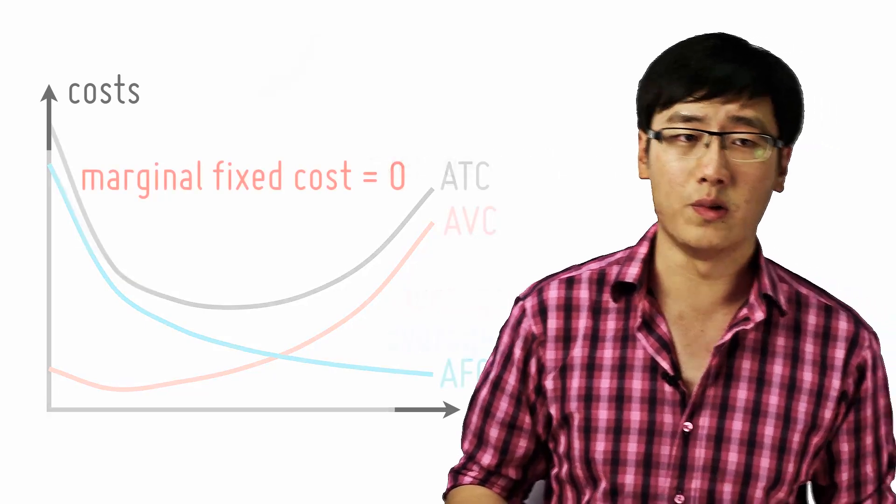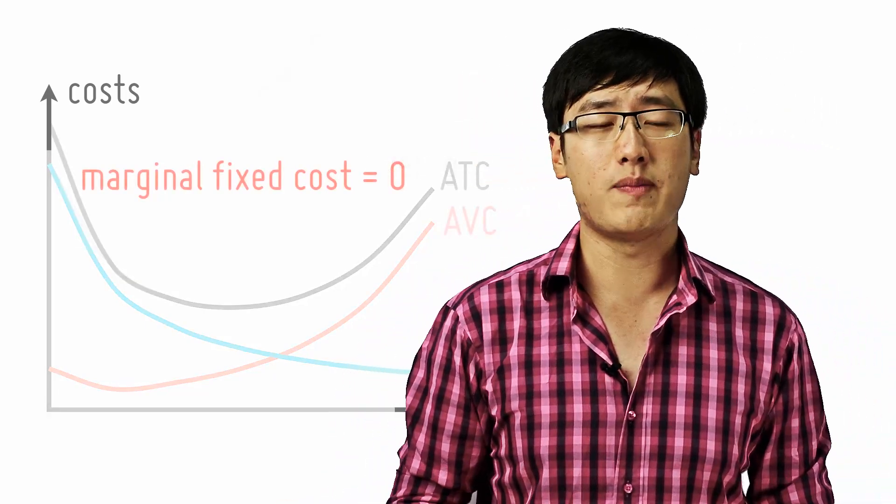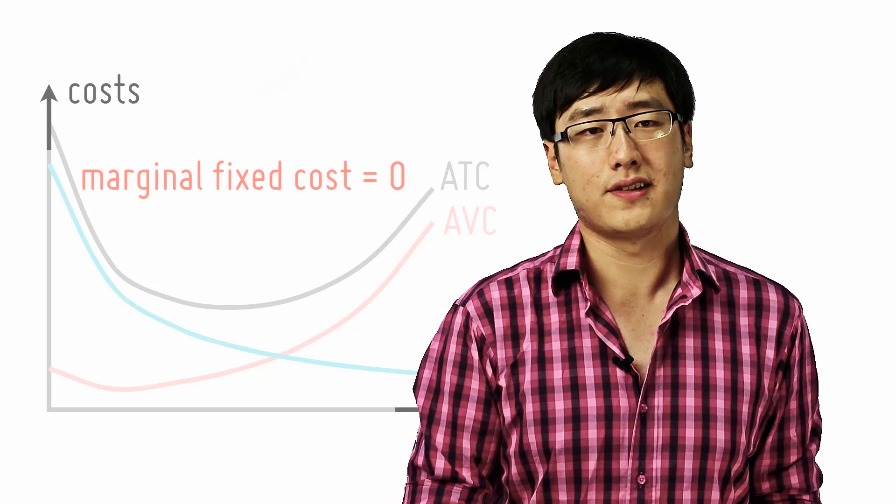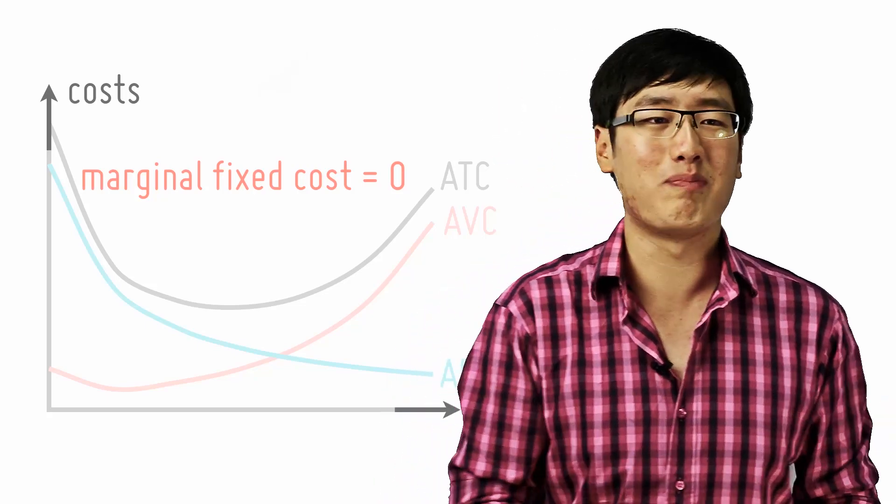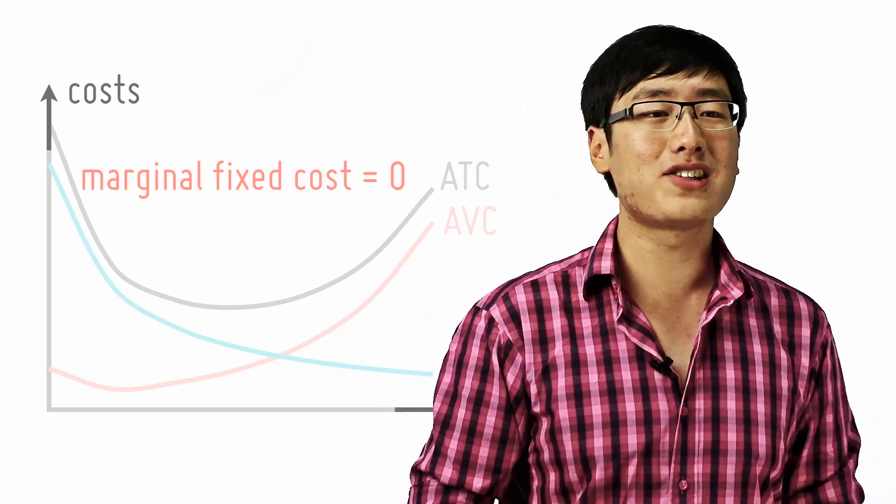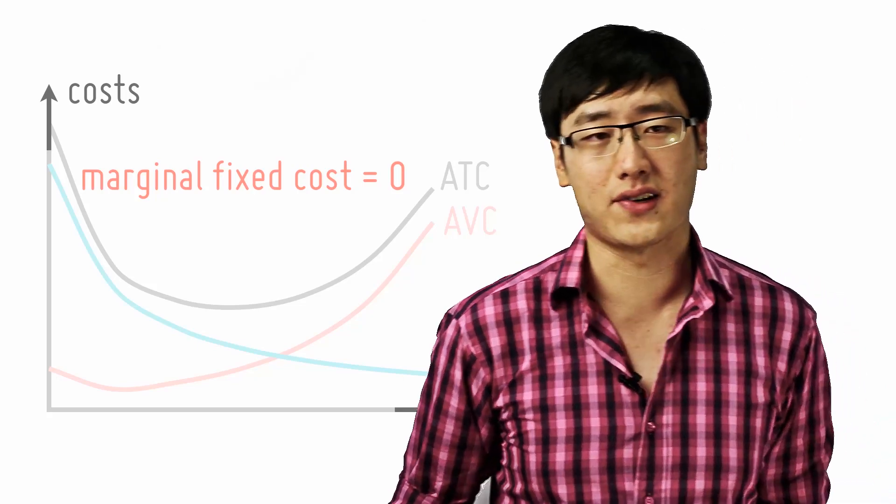So let's move on to marginal costs. Do we talk about marginal fixed costs? Of course not. The fixed cost is a lump sum we pay at the start. So any additional unit incurs zero marginal fixed costs. Think about this.